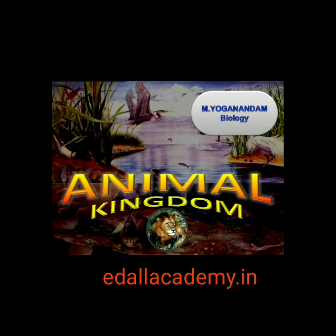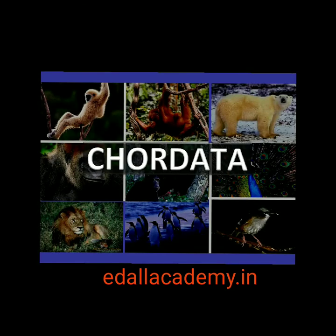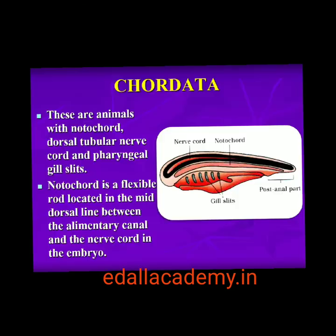4.2.11 Phylum Chordata. Animals belonging to Phylum Chordata are fundamentally characterized by the presence of a notocord, a dorsal hollow nerve cord, and paired pharyngeal gill slits. These are bilaterally symmetrical, triploblastic, coelomate with organ system level of organization. They possess a post-anal tail and a closed circulatory system.